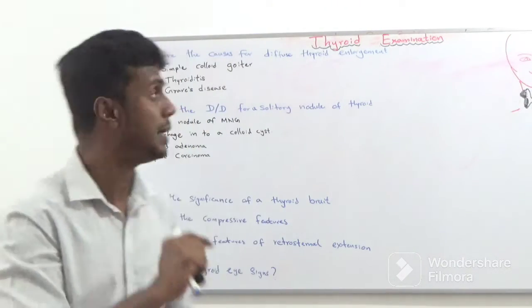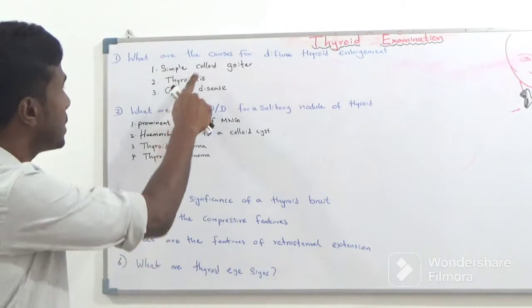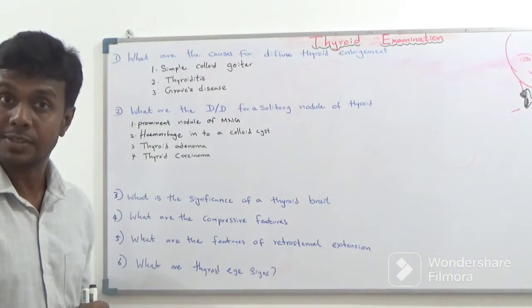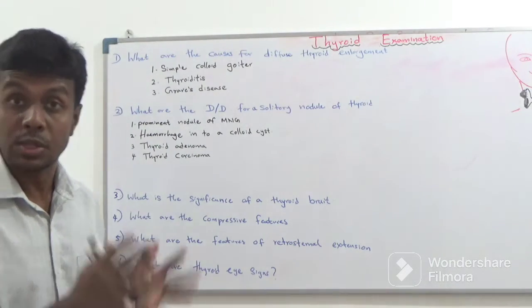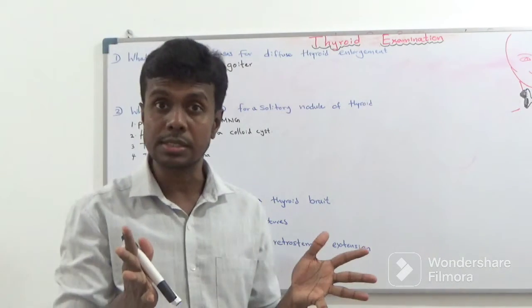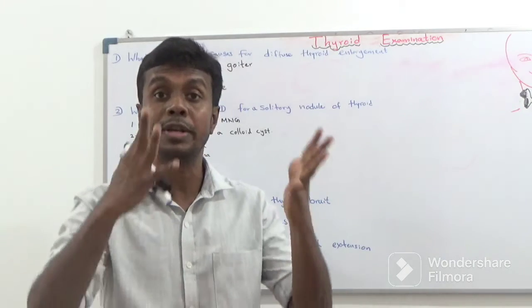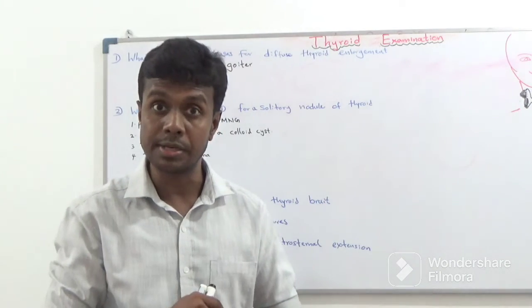It can be due to simple colloid goitre, thyroiditis, or Graves' disease. In those conditions the thyroid gland is uniformly and diffusely enlarged.